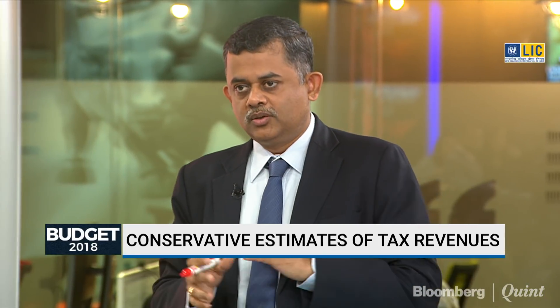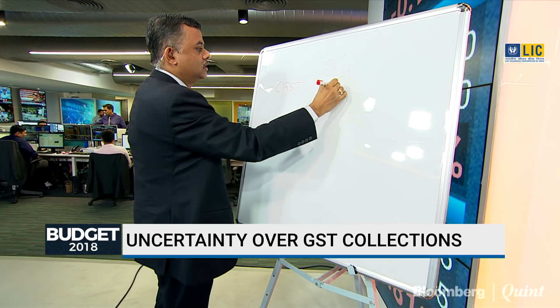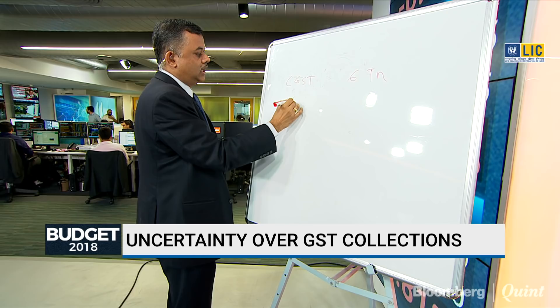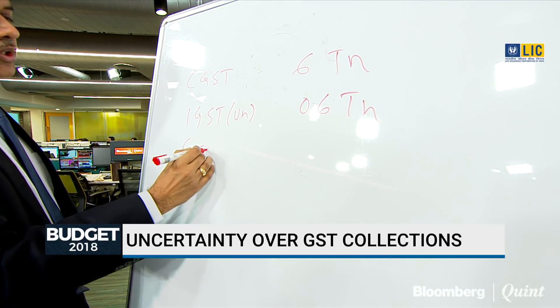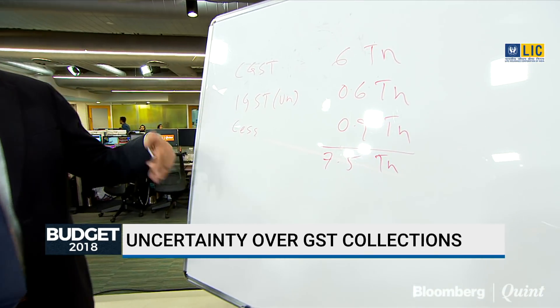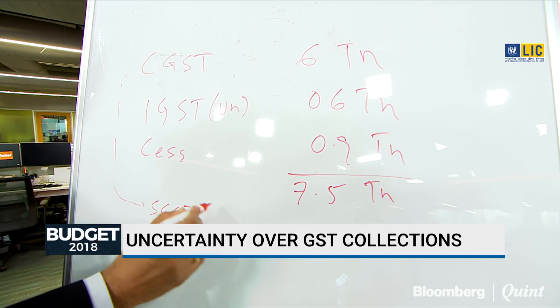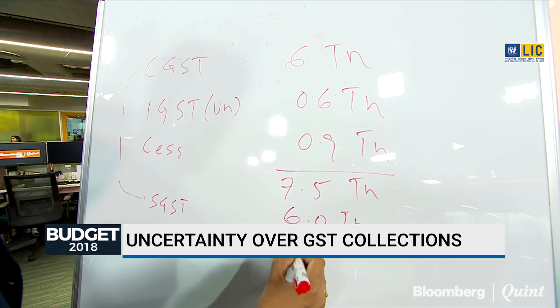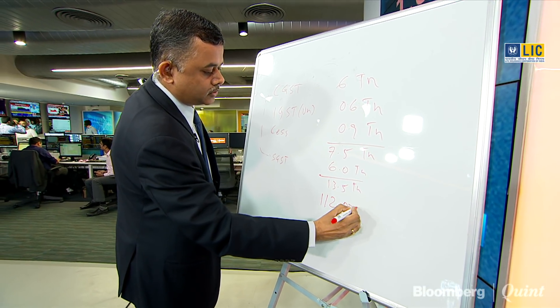It's important to look at the aggregate number because from the bond market or broader economic perspective, how revenues are distributed between center and state doesn't matter that much. In the budget numbers there is CGST of 6 trillion, IGST unallocated of 0.6 trillion, and cess of about 0.9 trillion. Adding these up gives about 7.5 trillion, which is the center's assumption. People then assume SGST equals that, adding another 6 trillion to get 13.5 trillion — equating to a monthly rate of about 1,02,000 to 1,12,000 crores.